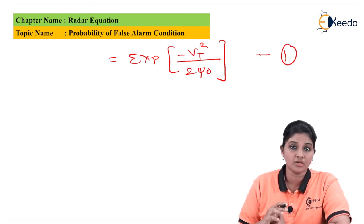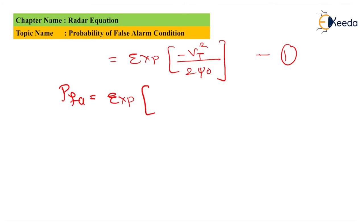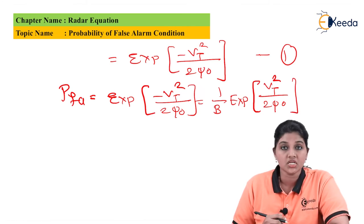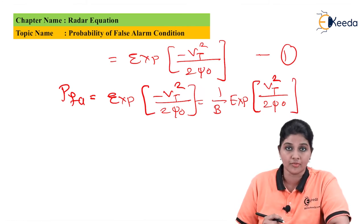Now the next equation can be given as the probability of false alarm. In the equation, B represents the bandwidth of IF amplifier.